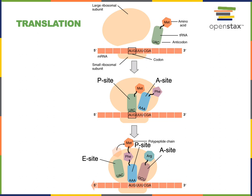A new charged tRNA enters the A site, and the process of elongation continues in a cycle: the polypeptide is transferred onto the tRNA at the A site, the ribosome moves so that tRNA shifts from the A site to the P site, and the uncharged tRNA moves from the P site to the E site to exit the ribosome. This mechanism continues adding amino acids corresponding to the codons in the messenger RNA until a stop codon is reached, at which point the ribosome releases the newly formed polypeptide.